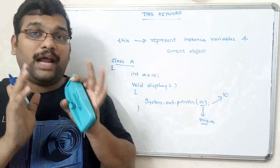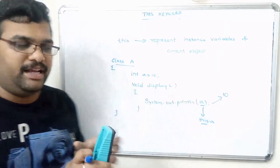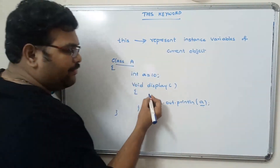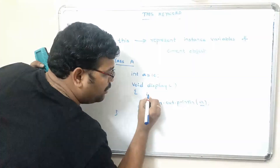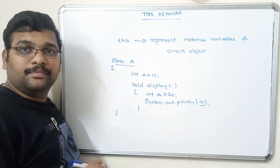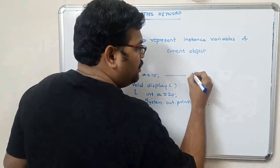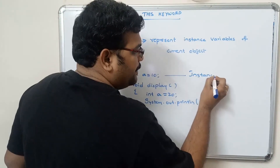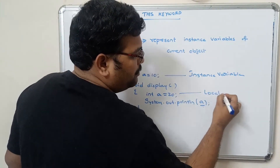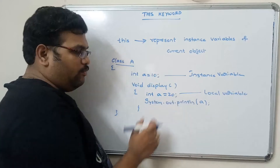However, there are some cases where we have to use the 'this' keyword explicitly. Let us see the problematic case. If the method is also having the same variable — for example, 'int a = 20' — then this 'a' inside the method is a local variable, which is different from the instance variable 'a = 10' declared in the class.